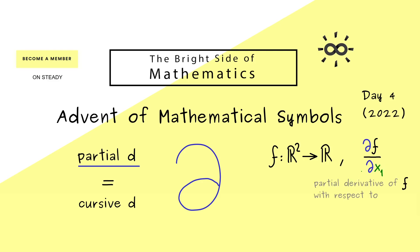So we have df over dx₁. And then we simply say, this is the partial derivative of f with respect to x₁. And there you see, we use this curve d to distinguish the partial derivative from a normal derivative in one variable.